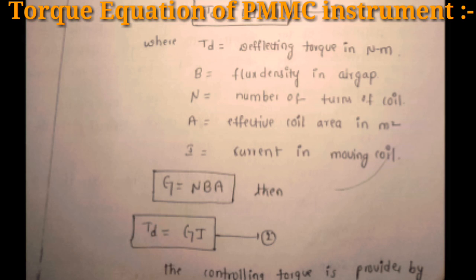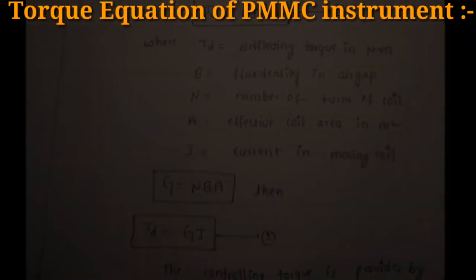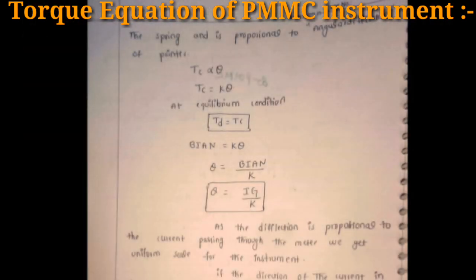Since N, B, and A are all constants, they can be combined as a single constant G, so Td = GI. The controlling spring torque Tc is proportional to angular deflection: Tc = Kθ. At equilibrium, Td = Tc, giving BIAN = Kθ, so θ = (G/K) × I. Since G/K is a constant, the deflection angle θ is proportional to current I in the PMMC instrument.